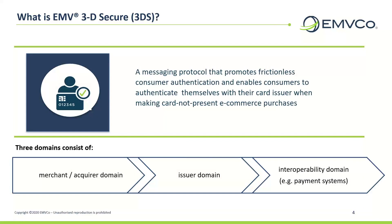The EMV3DS specification details a messaging protocol that enables cardholders to authenticate themselves with their card issuer when making card not present e-commerce purchases, and promotes frictionless customer authentication. The additional security layer it provides helps prevent unauthorized CNP transactions and protect the merchant from exposure to CNP fraud. The three domains consist of the merchant and acquirer domain, the issuer domain, and the interoperability domain, for example, payment systems.